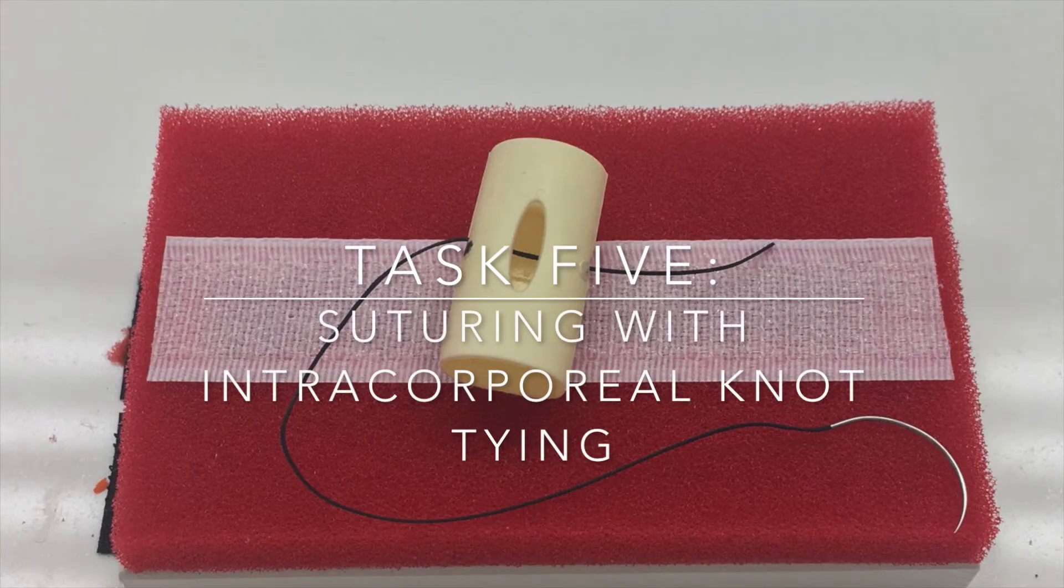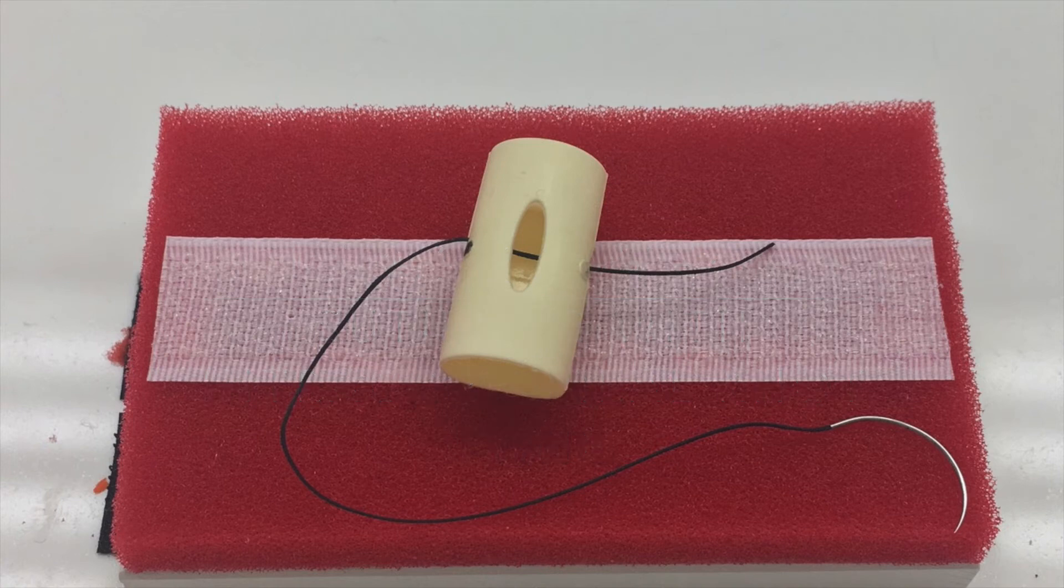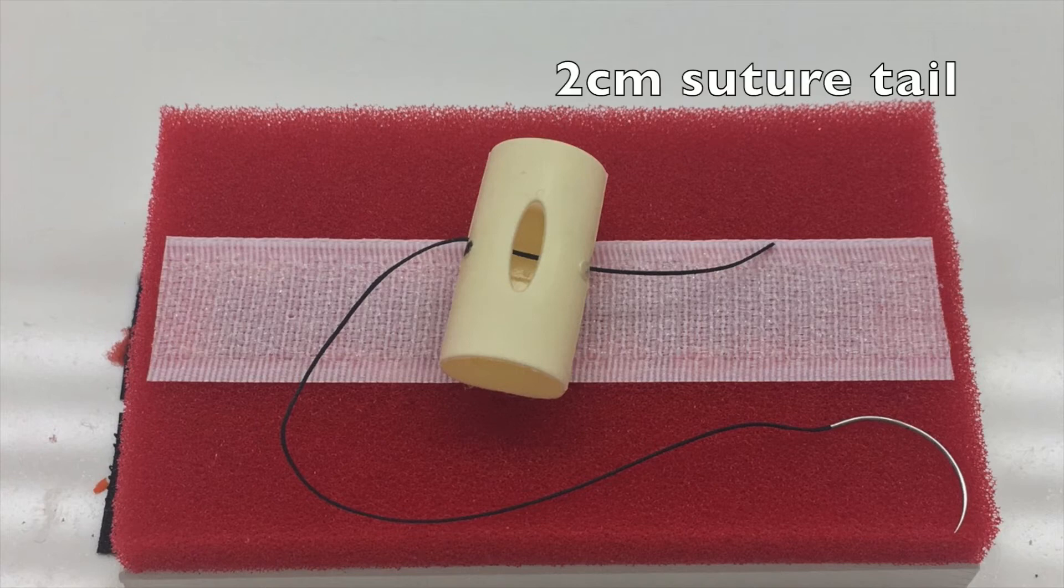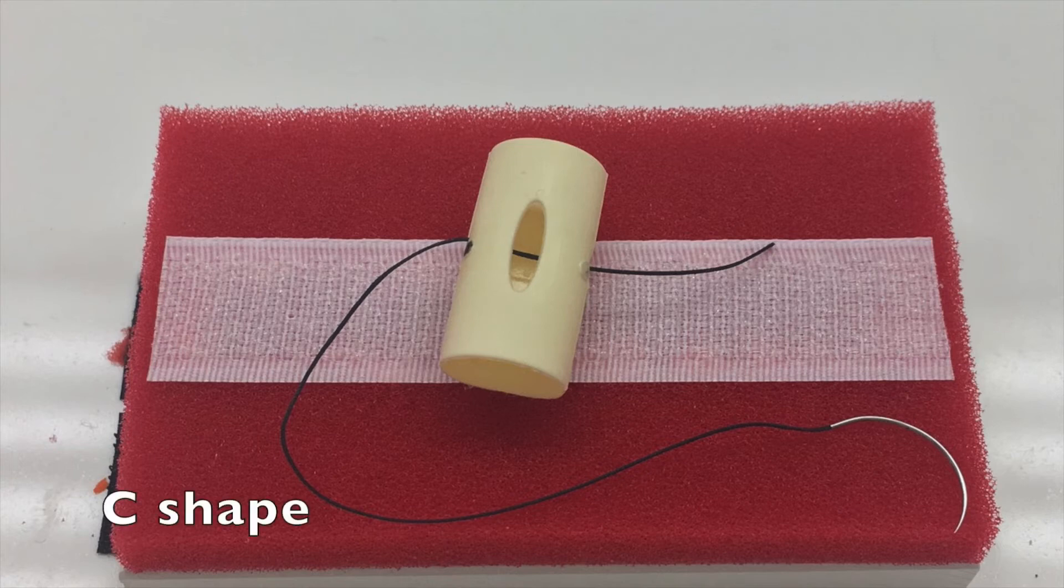Task 5, Suturing with Intracorporeal Knot Tying. After placing the needle through the incision, pull the suture tail to approximately 2cm in length and orient the suture in a C shape.